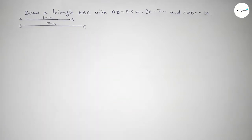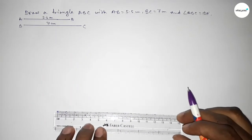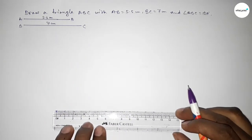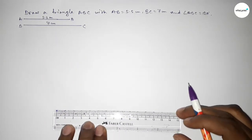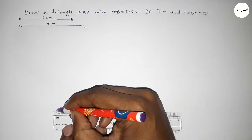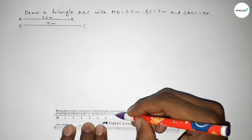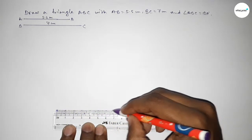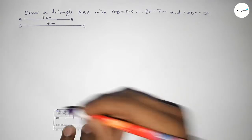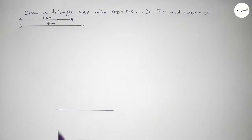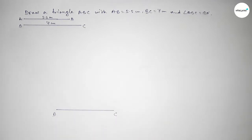First we draw a line of length 7 centimeter — marking from 0, 1, 2, 3, 4, 5, 6, 7. So this line is BC, with B and C as the endpoints.